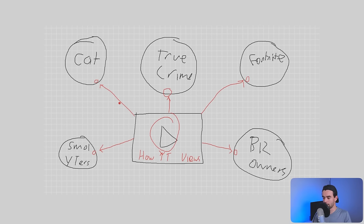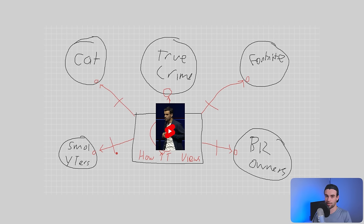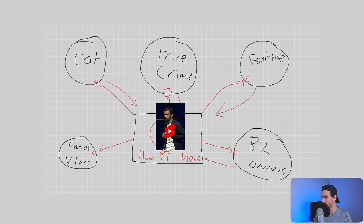Coming back to our whiteboard — if I did take this clip and post it as a short, one of two things would probably happen. Either the hook is too vague and just doesn't grab people well enough, so when the algorithm tests promoting this to lots of people, no one actually watches it and it dies completely. Or, if the hook is interesting enough to catch people's attention, because it's so general and vague, this short is going to start getting views from cat lovers, true crime lovers, Fortnite enthusiasts, business owners, and our small YouTuber audience who we actually want to target.